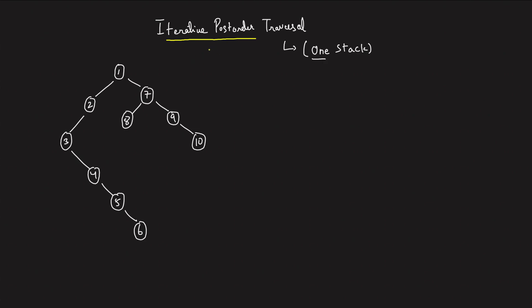So what's a post-order traversal? It's basically left, then right, and then root — that is what a post-order traversal is. So what did you do in the recursion? If you remember, it was left, then it was right, then it was print.